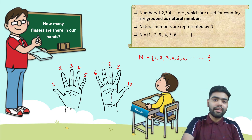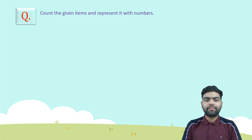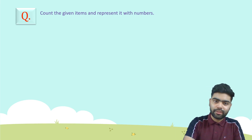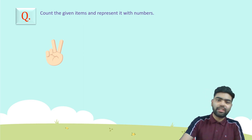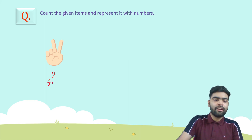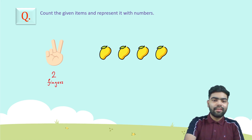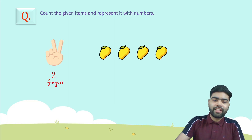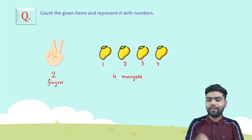Now let's do some practice questions — count the given items and represent them with numbers. First question: how many fingers do you see? You are right — there are two fingers. Next, how many mangoes do you see? One, two, three, four — there are a total of four mangoes.